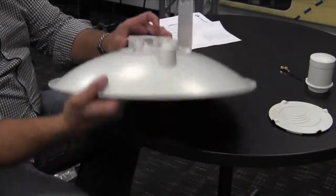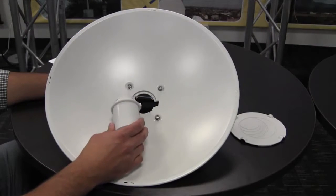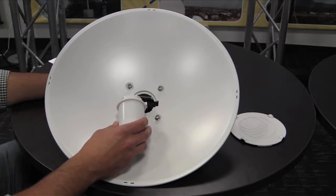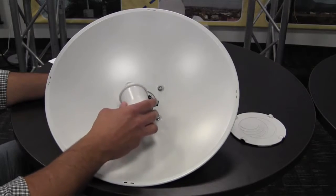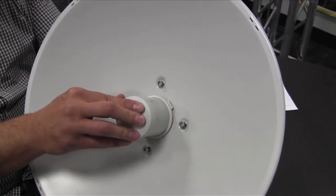After hand tightening the four screws to the bottom assembly, flip it over. Insert the RF cables of the feed and line up the feed's notch with the assembly, being careful not to crimp the RF cables. Press down on the feed until you hear it click.